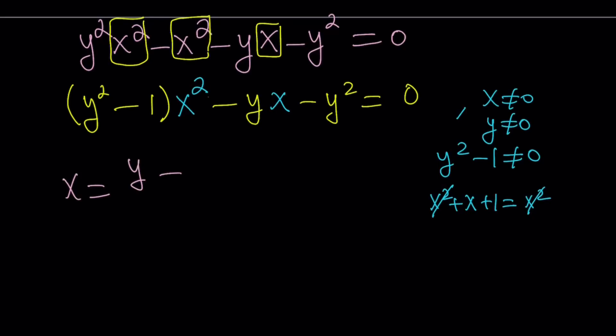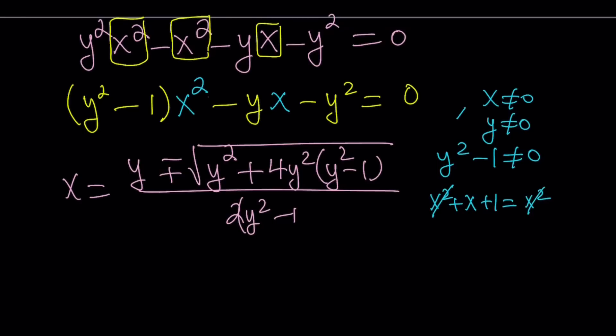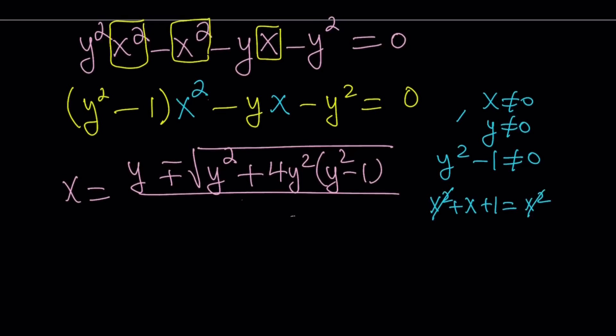plus minus the square root of y squared, which is b squared, minus 4ac. But that's a minus minus, so that becomes a plus sign, times 4 times y squared times y squared minus 1. And all of that is divided by 2a, which is 2 times y squared minus 1. We could probably just write it like this, with parentheses, or you can distribute if you want.